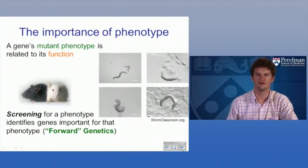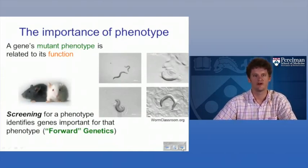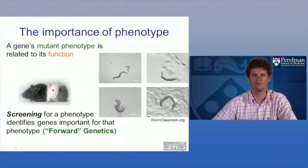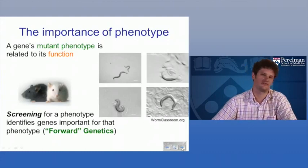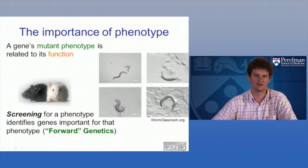A gene's function — what it's important for in the cell — will manifest itself in the loss-of-function phenotype, or gain-of-function phenotype in some cases. When that gene is altered, the phenotypes you see will result from the processes that are defective in those mutants.